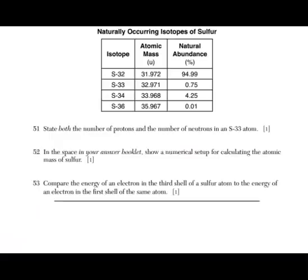But question 53, compare the energy of an electron in the third shell of a sulfur atom to the energy of an electron in the first shell of the same atom. The further away electrons are from the nucleus, the more energy that they have. So you could say the third shell electron has a greater energy than the first shell, or you could even say first shell has less energy than the third shell. But you have to compare both. So make sure you talk about the electron in the third shell and the electron in the first shell. With that, that's the first three questions here. Do me a favor. If you haven't subscribed to my channel, please do so. Hit the notification button. Let's keep going.